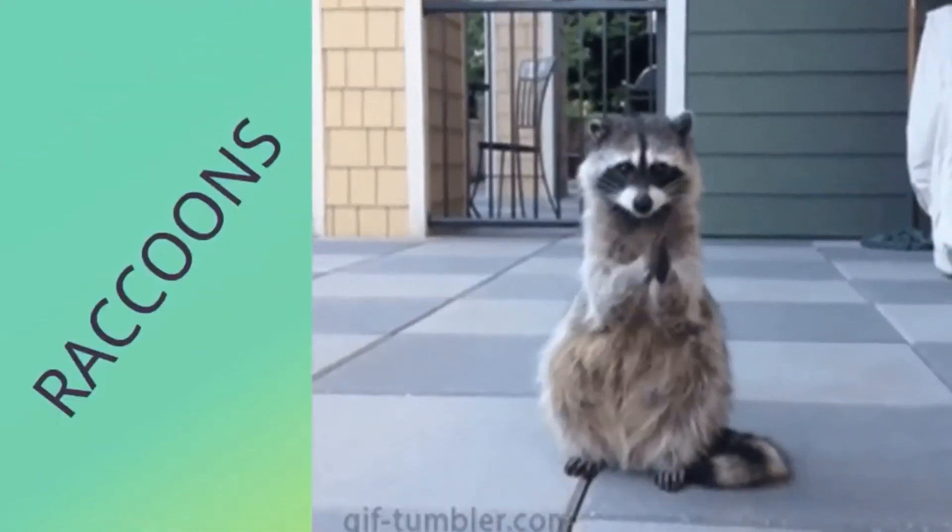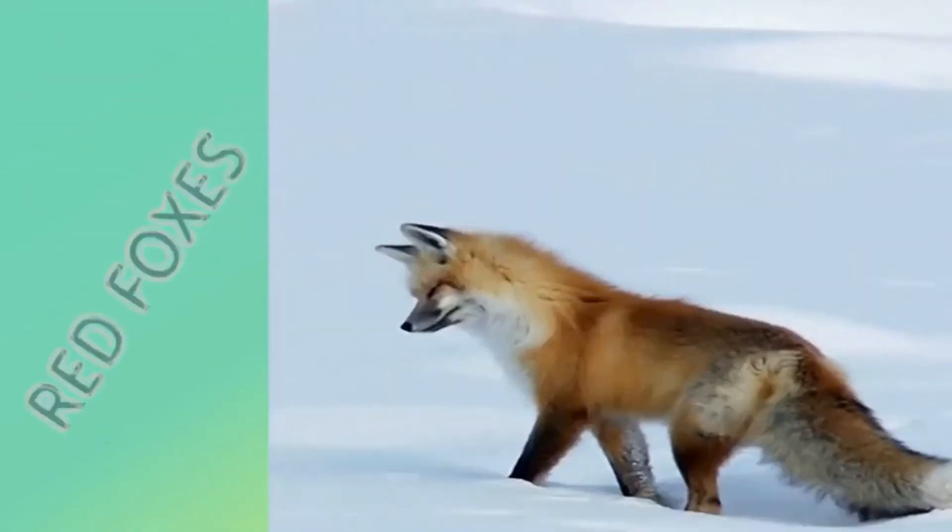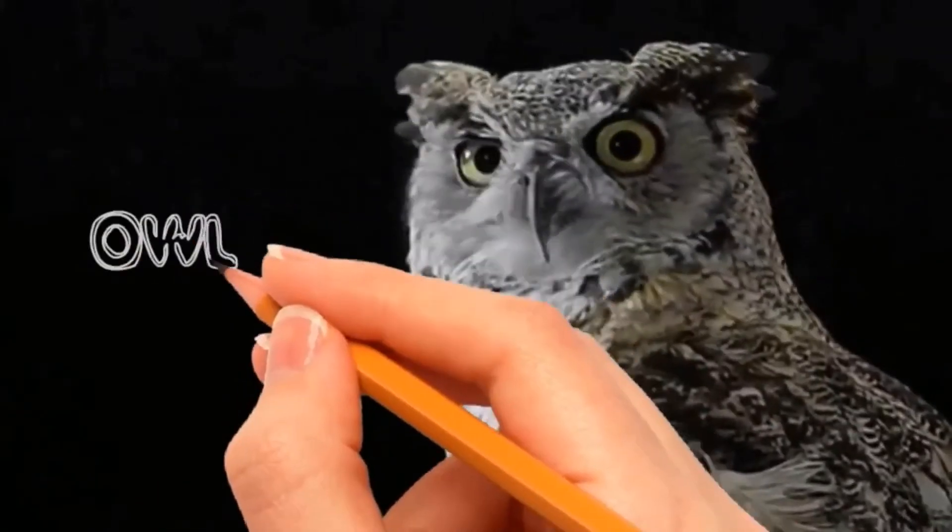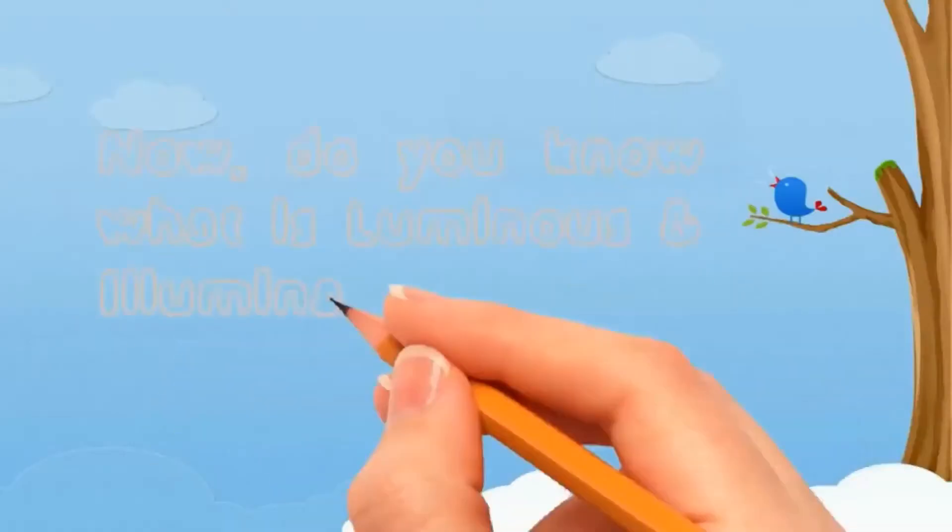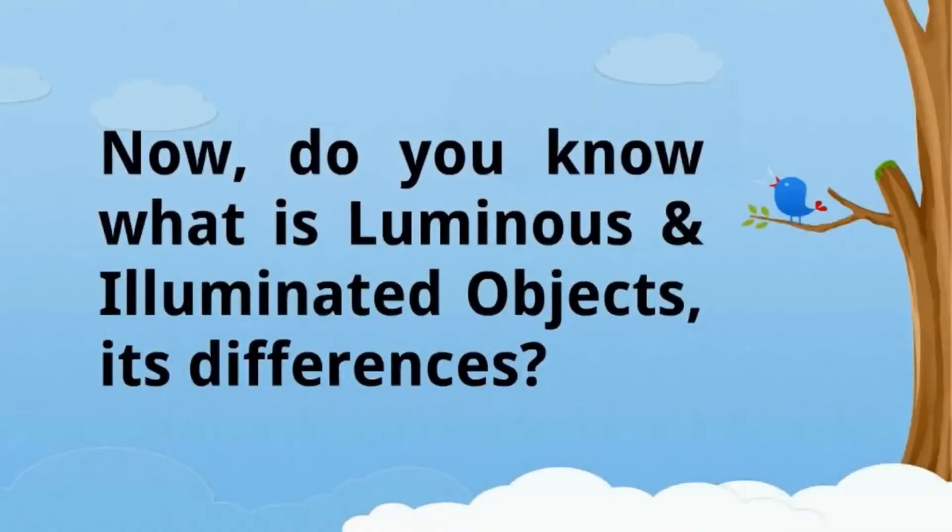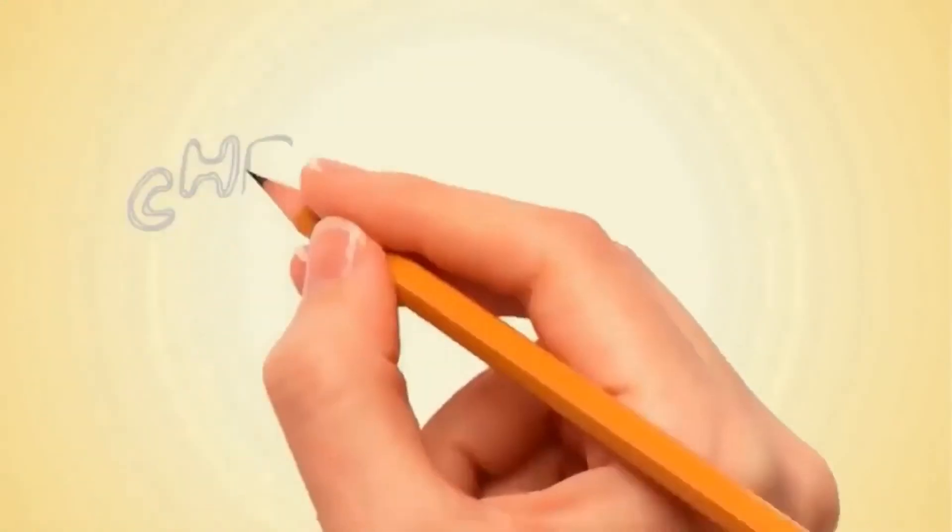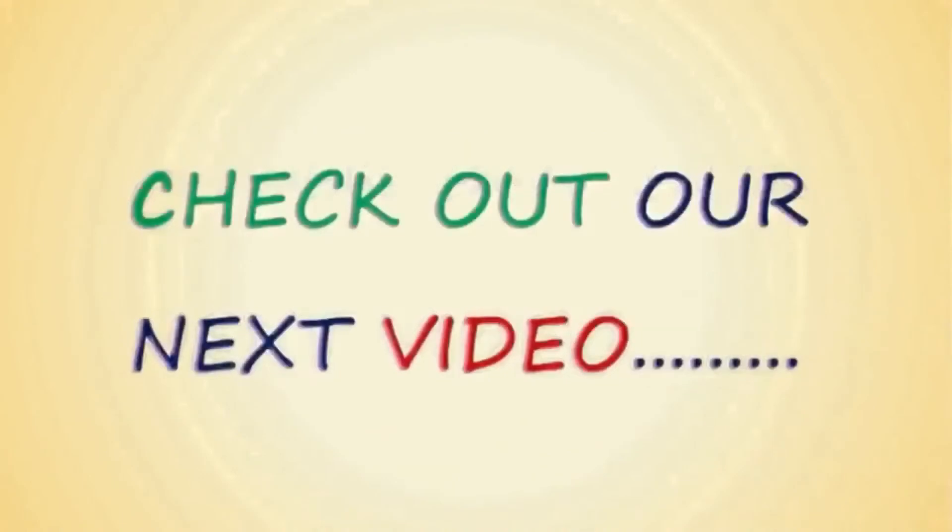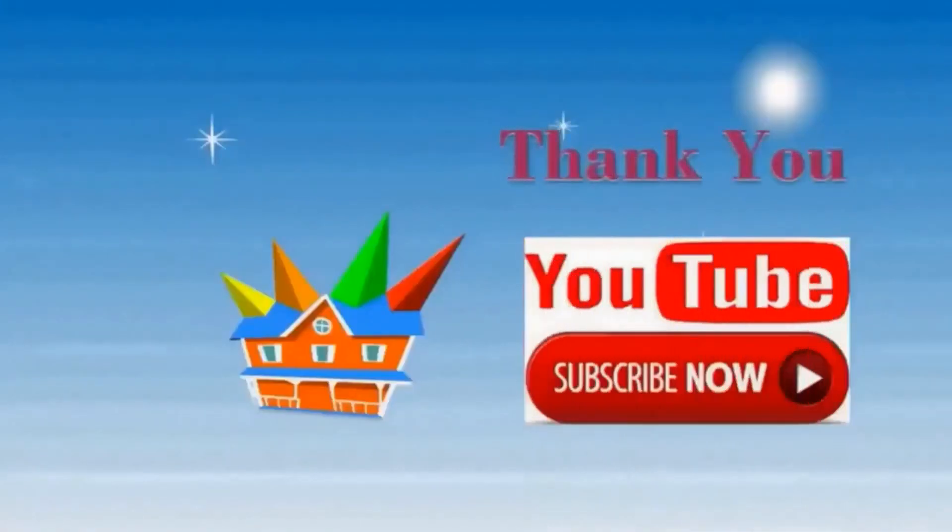Do you know who can see at night without light? Raccoons, red foxes, owls - they all can see at night without light. Now do you know what are luminous and illuminated objects, their differences and examples? Check out our next video. Thank you so much for watching our videos. Please subscribe to our channel for latest updates.